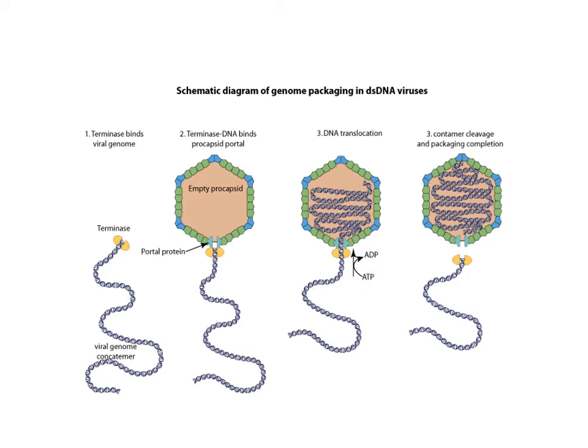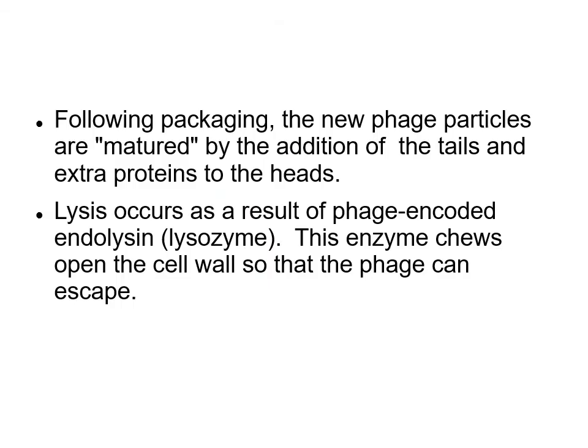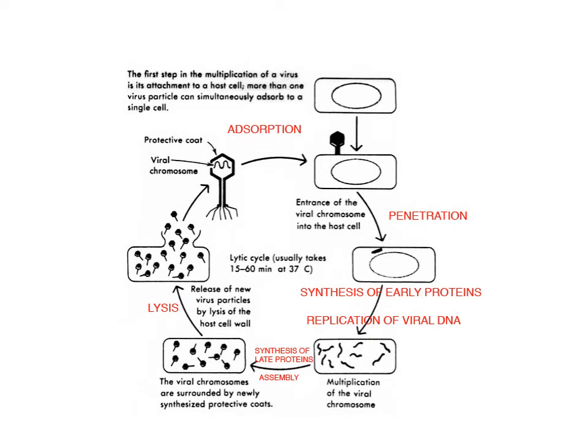Inside the cell, tails and base plates are separately assembled and joined with the capsid to form the mature phage. Lysis of the cell then occurs as a result of a phage-encoded endolysin, which is lysozyme — the enzyme chews open the cell wall so the phage can escape, setting up a new round of infection.